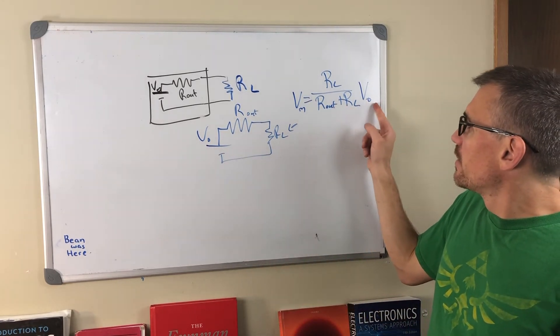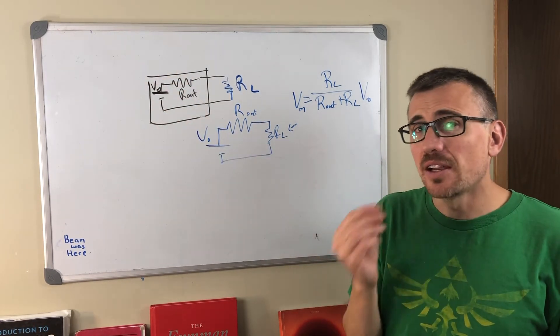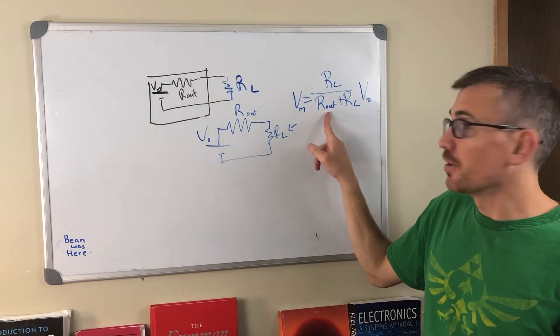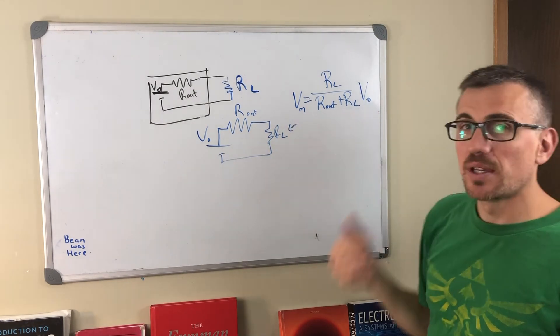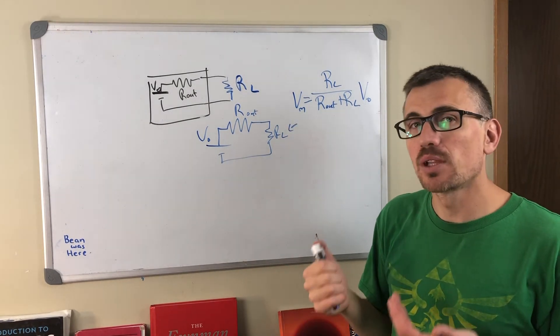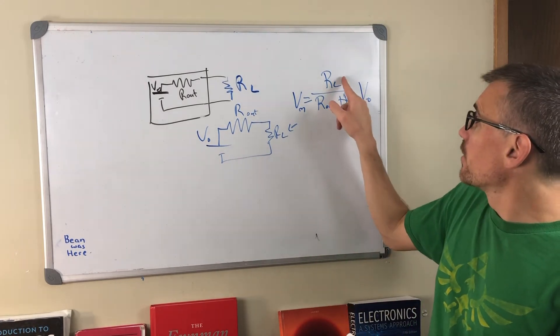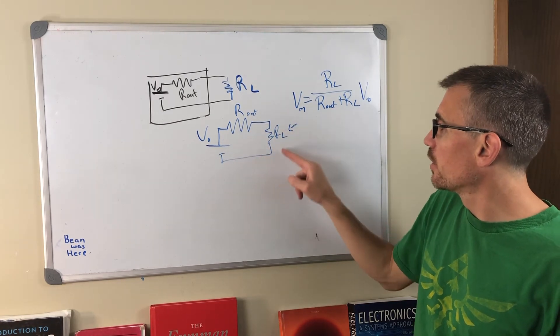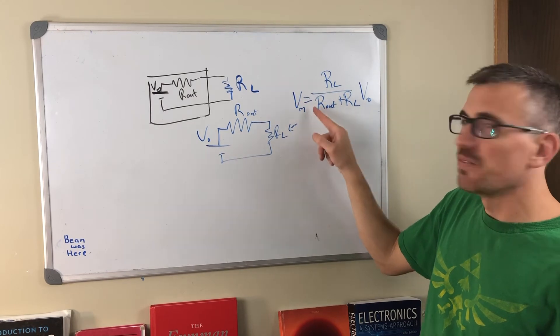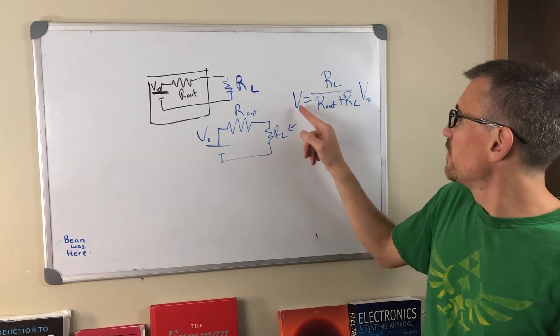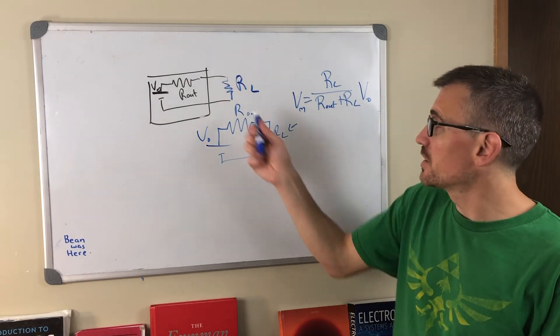When do we actually get V_naught? When do we get this ideal V output here? Well, if we have an ideal source, for example, our output goes to zero. Then we have RL divided by RL, one. So V_measured equals V_out, no matter what. That's nice. So we just have to have a really good voltage source. On the other hand, what if RL is huge? We have a very huge load resistance here. Then this goes into like, infinity divided by infinity plus one. That's also one. And V_measure is equal to V_out.